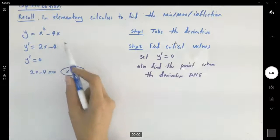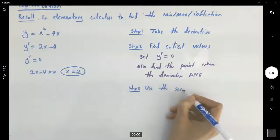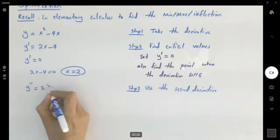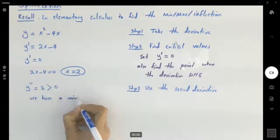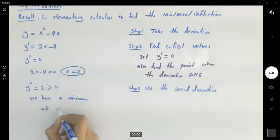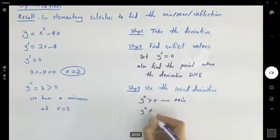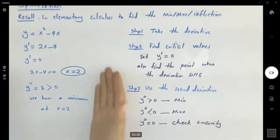At x equals 2 you either have a minimum or a maximum. Step three: use the second derivative test. The second derivative is equal to 2. Since it is positive, you have a minimum at x equals 2. If the second derivative at that point is positive, you have a minimum; if negative, a maximum; and if it equals zero, you need to check the concavity.